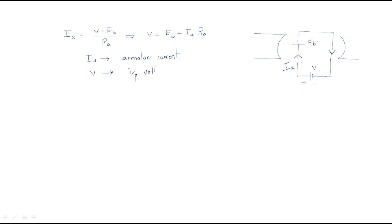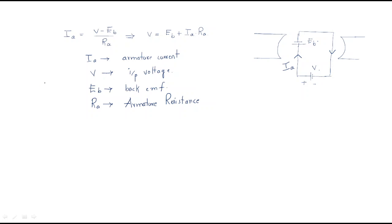Here V is the input voltage, since we are supplying electrical input to the motor. Eb is the back EMF. Ra is the armature resistance — every winding has some resistance, called armature resistance Ra. So the final equation is: V = Eb + Ia·Ra.